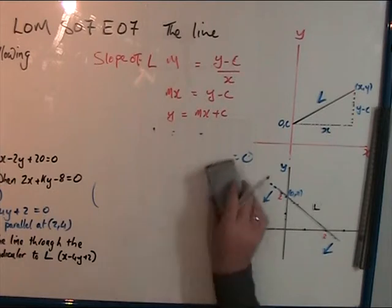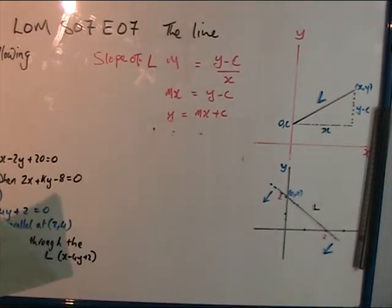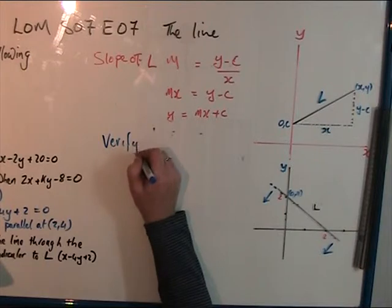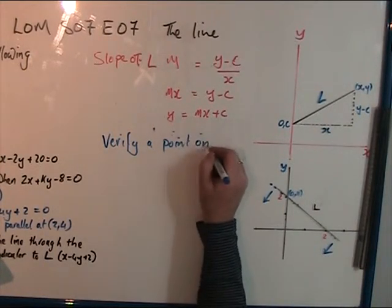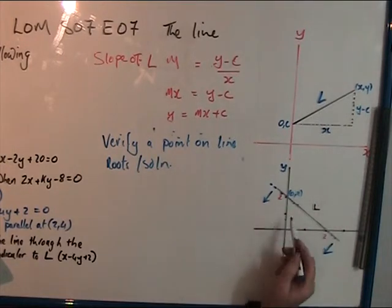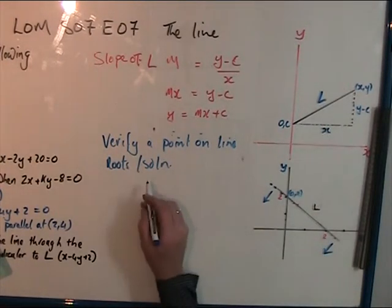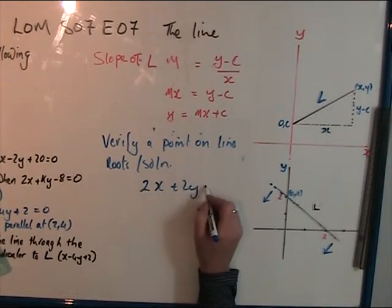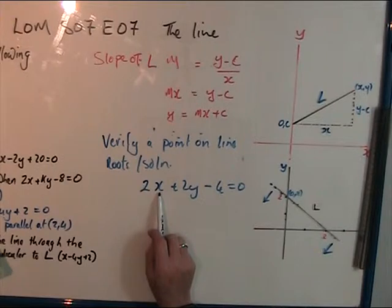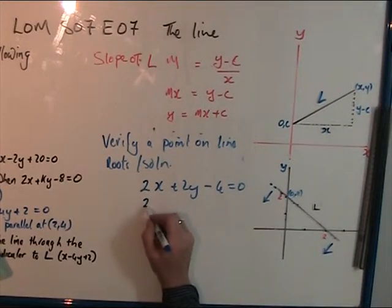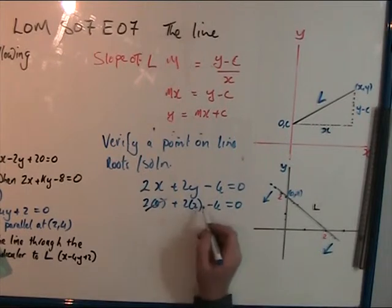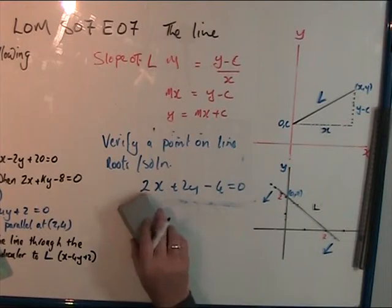Now let's verify a point on the line — in other words, confirm it has a solution, the same as checking whether a point is on L. We know points (0, 2) and (2, 0) are on the line, so we slot them in: 2 times 0 plus 2 times 2 minus 4 equals 0. Four minus four equals zero — yes, it is on the line.